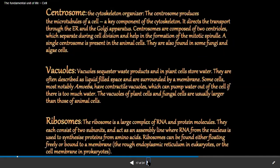The next topic is the centrosome. The centrosome is the cytoskeleton organizer — it produces the microtubules of a cell and is a key component of the cytoskeleton. It directs the transport through the ER and Golgi apparatus. Centrosomes are composed of two centrioles which separate during cell division, helping in the formation of the mitotic spindle.